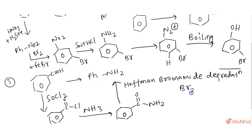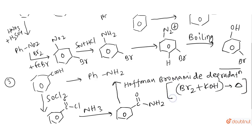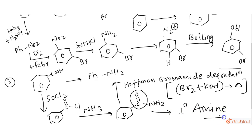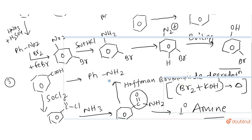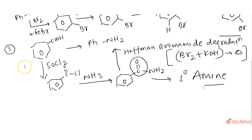After the Hoffmann bromamide reaction, the CO group is completely eliminated on heating, and the compound is converted into a primary amine — aniline.